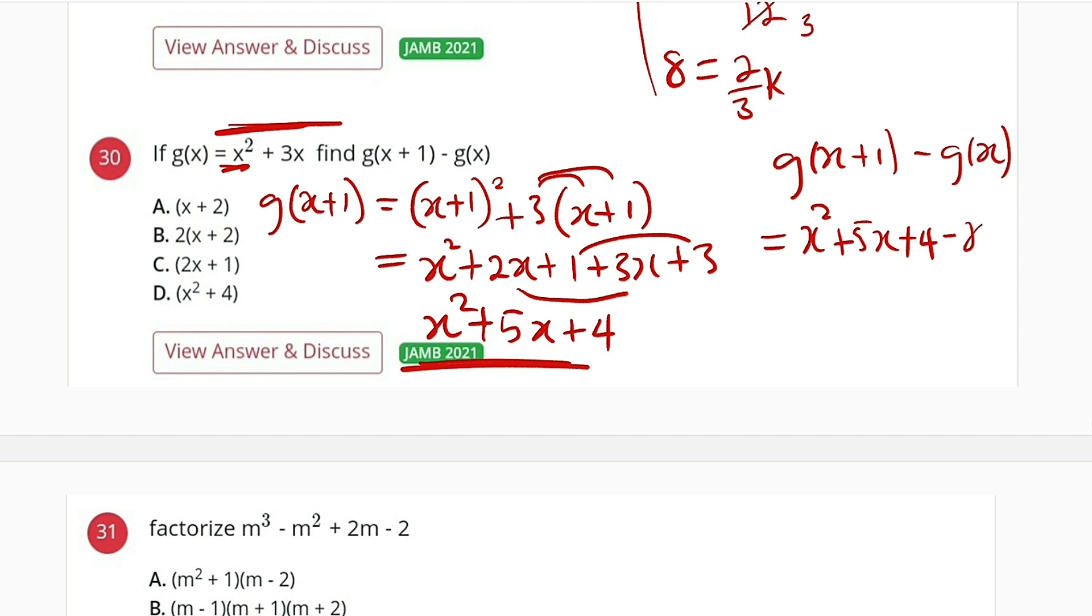Then you subtract x squared and you also subtract 3x. This will eliminate this. We have 5x minus 3x is 2x plus 4.